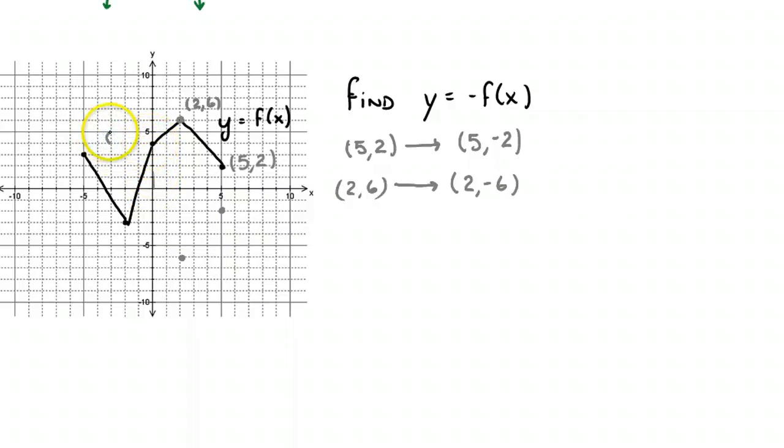This is the point 0, 4. So 0, 4 will become the point 0, negative 4. And we don't have to break this out. We can do this right on the graph. So this is negative 2, negative 3. So it's going to be 2, 3, negative 5, 3. So it's going to be negative 5, negative 3. And then we connect these dots in the same order. And there is the relationship y equals negative f of x. Let's draw this one a little bit better.